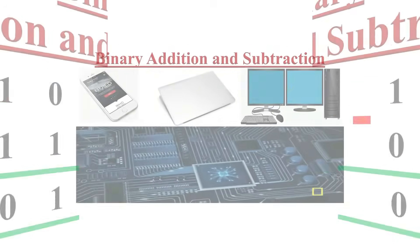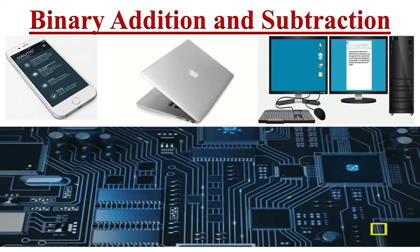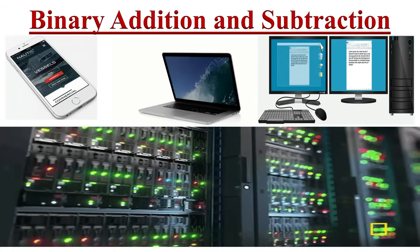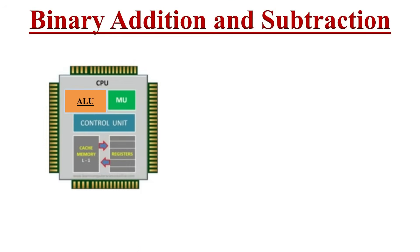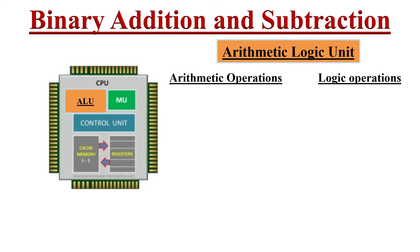Electronic devices like computers have made our life simple and faster. These devices contain most important integrated circuit chips like microprocessors and microcontrollers. If we observe the block diagram of these integrated chips, we can identify a most important block that is ALU — arithmetic logic unit — which performs all arithmetic and logic functions like addition, subtraction, AND, OR logic, and so on.